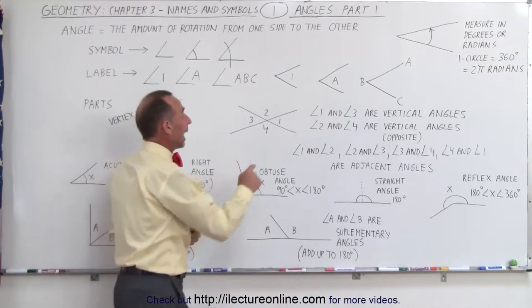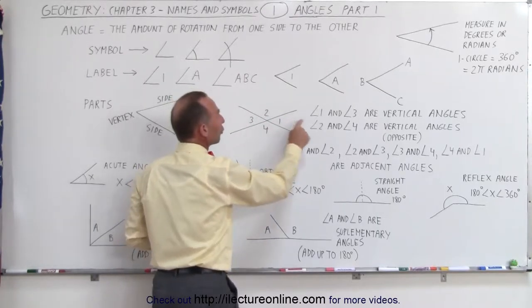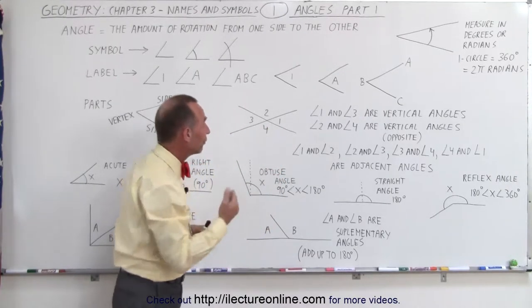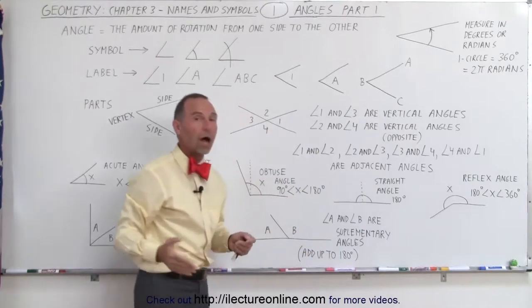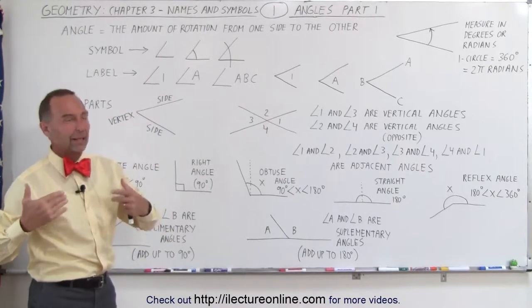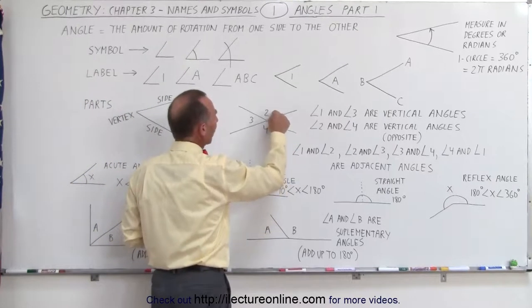Now notice angle 1 and angle 3 are opposite one another. These are therefore called vertical angles. Also 2 and 4 are opposite to one another. So 2 and 4 are also called vertical angles. Or sometimes we use the word opposite angles. So when you hear the word vertical, just think about opposite.